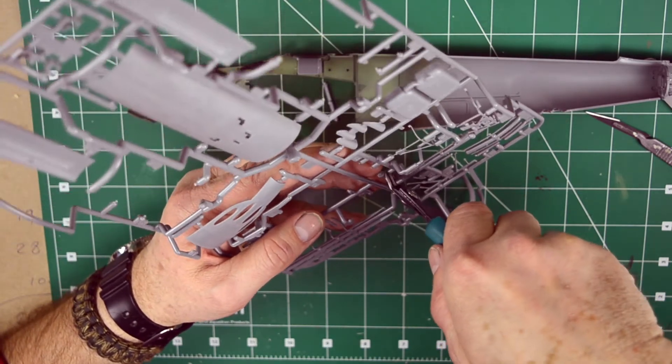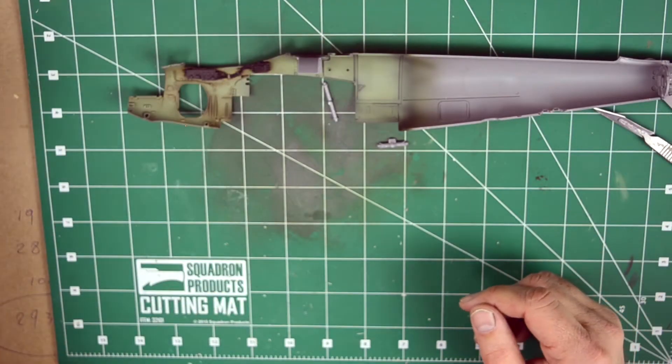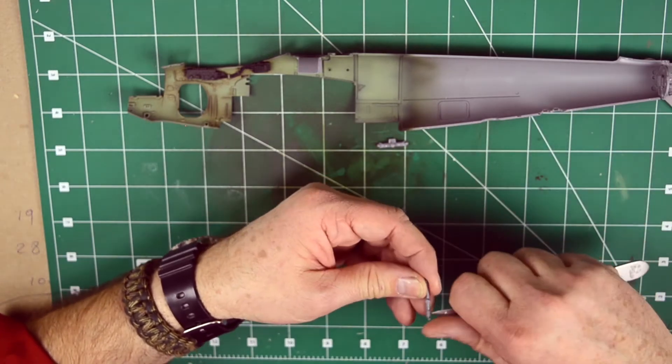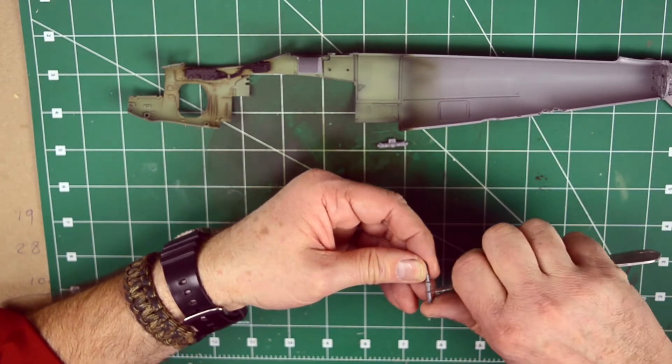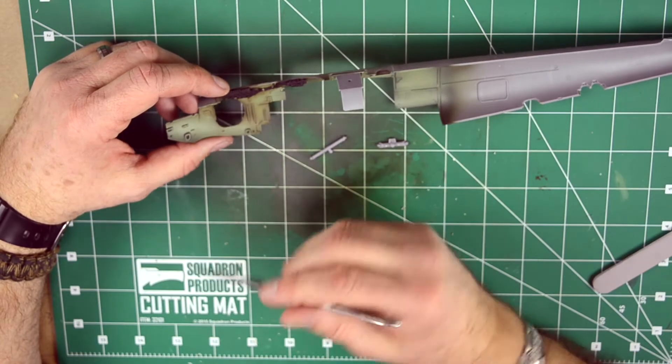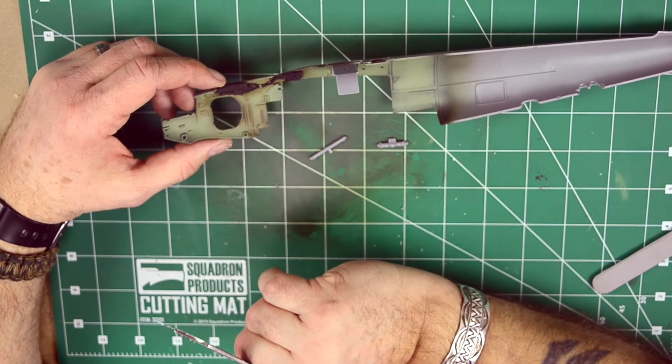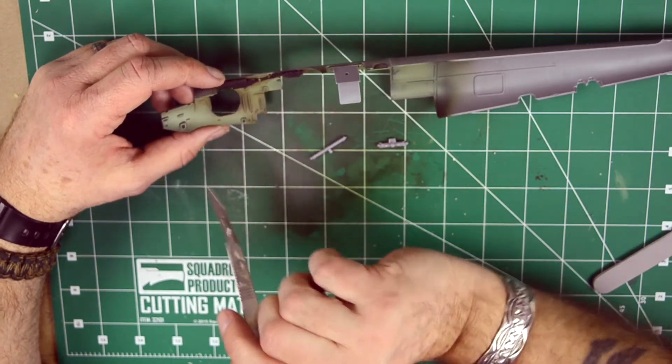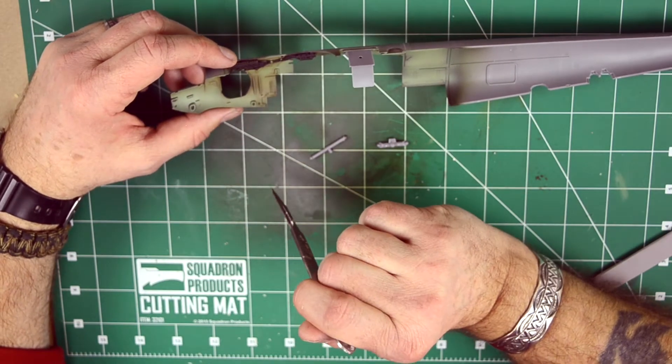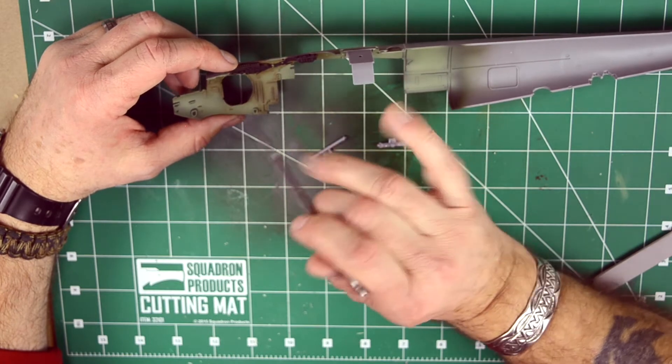Again there are a few points where the instruction sheet gives you the option of opening the bomb bay doors and I also decided not to do that. I personally do not like opening hatches except for the door here. The only thing I would like to leave open is the entrance door, the access door for the cockpit. I'll make sure that I prepare everything so eventually I can leave that door open.